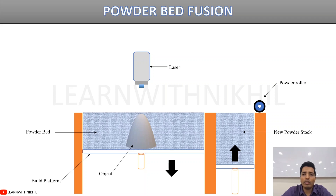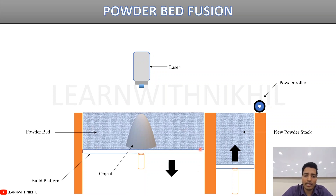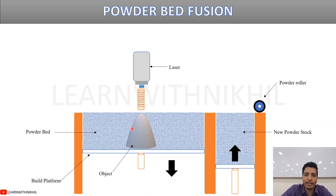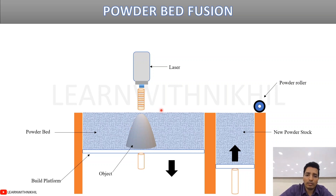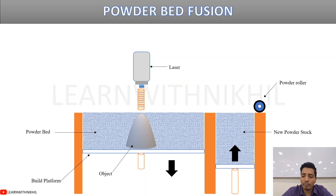Powder bed fusion is similar to binder jetting in that it uses a powder bed with the same new stock material setup. The key difference is that instead of a liquid binder, a laser is used to fuse and solidify the powder. The laser sinters or melts the powder at the required locations. Otherwise, the overall process is essentially the same as binder jetting.